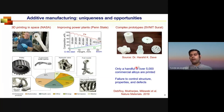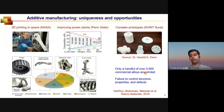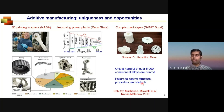Currently, among the 5,000 alloys available, we can only print a few — you could probably count them on your two hands. We are still unable to consistently control microstructure, properties, and defects.